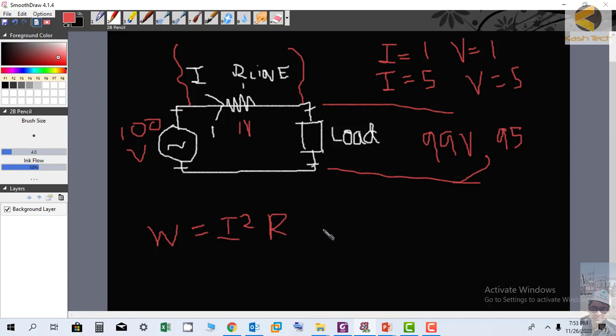For example, in our case, when the current is 1 ampere, I² losses will be equal to 1² × 1, which equals 1 watt. So if current equals 5, it will be 5² × 1.